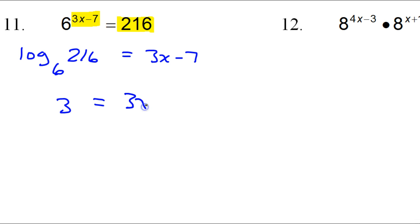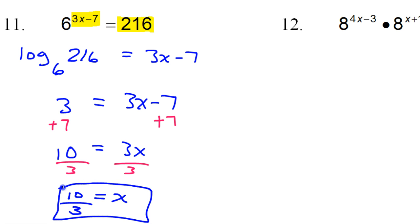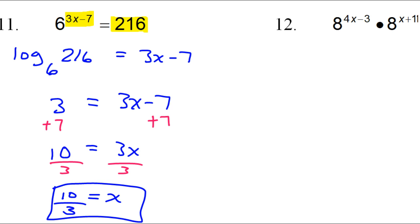So I have 3 is equal to 3x minus 7. And so this is the same thing we got earlier. So if we add 7 to both sides, there's your 10 is equal to 3x. And then dividing both sides by 3, we're getting x is equal to 10 over 3. So either way, you're going to get the same answer.